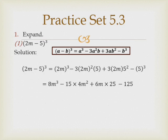Now calculating: (2m) cubed means 2 cubed is 8, so 8m cubed. Then minus 3 times 5 is 15, and (2m) squared is 4m squared, so minus 15 times 4m squared. Then plus 3 into 2m is 6m, times 5 squared which is 25. And minus 5 cubed is minus 125.